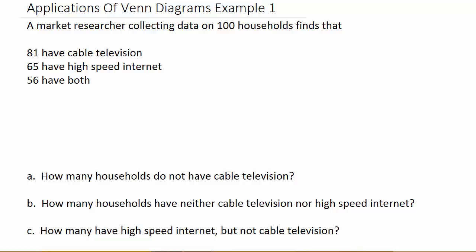Here's an application for Venn diagrams — this one is going to have two sets: the people that have cable television and people that have high-speed internet. I'll have another example in the description where there will be three sets, but I would watch this one first because it'll help the other one make more sense. A market researcher is collecting data on a hundred households.